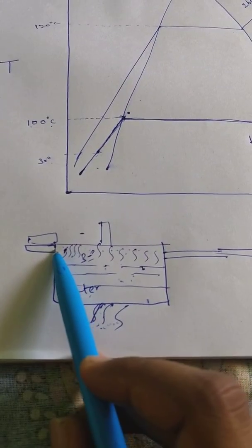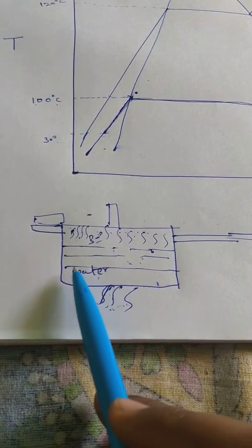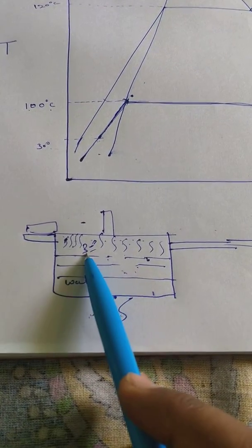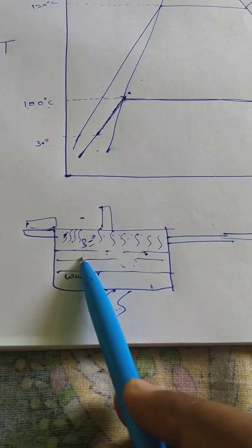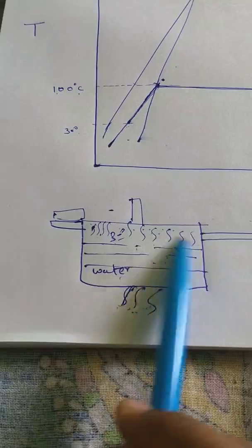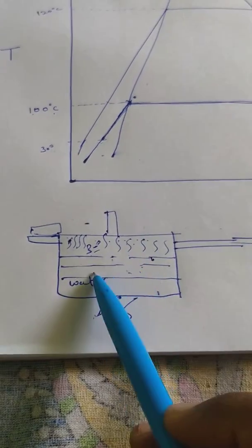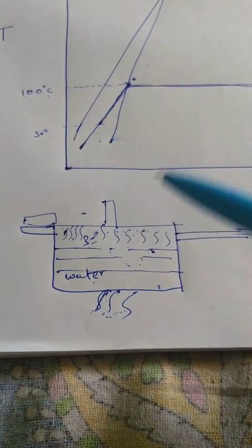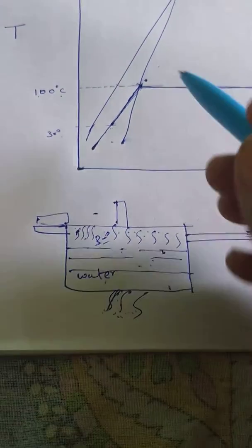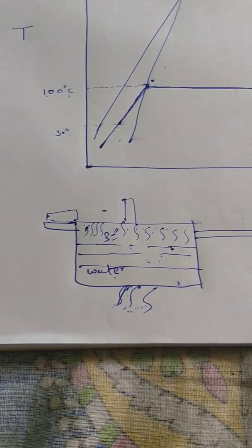Now we put the lid on the pressure cooker. Initially, the water is again taken from the atmosphere, so we start at 30°C. We assume the initial pressure is atmospheric (1 bar) and that not much air is trapped. We start giving heat, and the temperature increases from 30°C toward 100°C. Once the temperature reaches 100°C, steam formation will start.